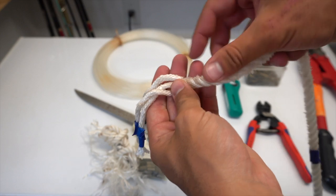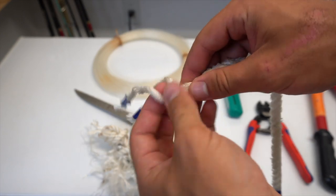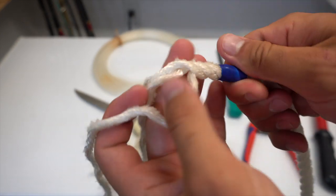The next thing you want to do is to start unwinding your three strands all the way down to where you wrap the tape around your rope.